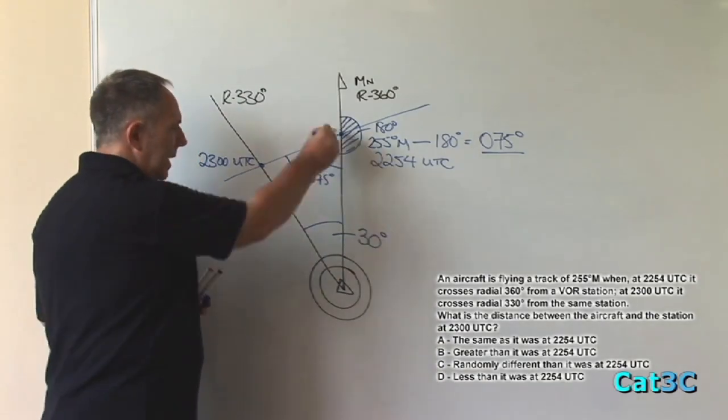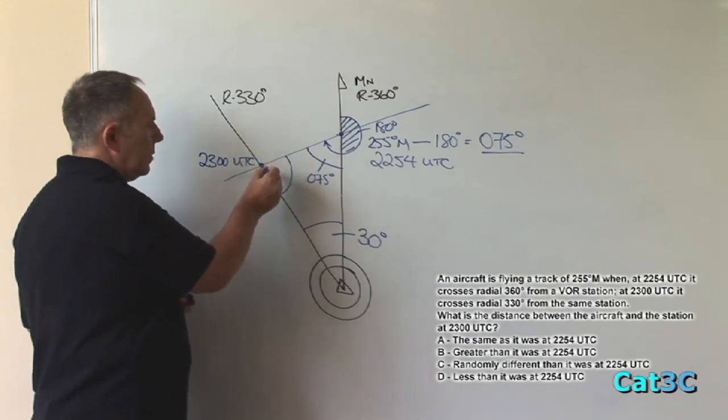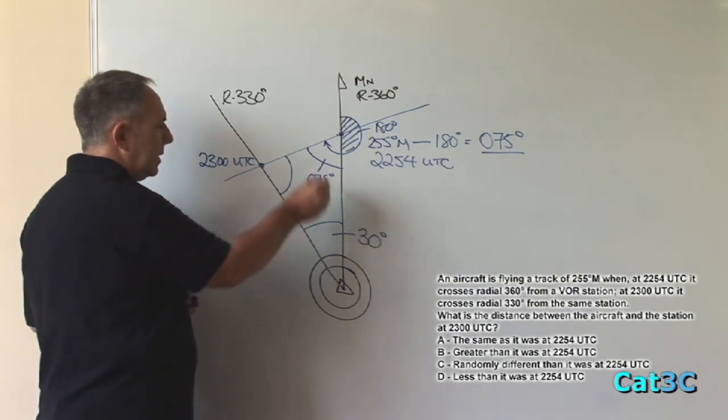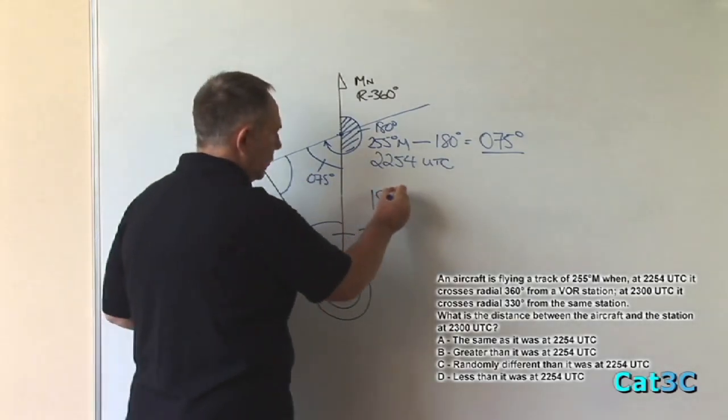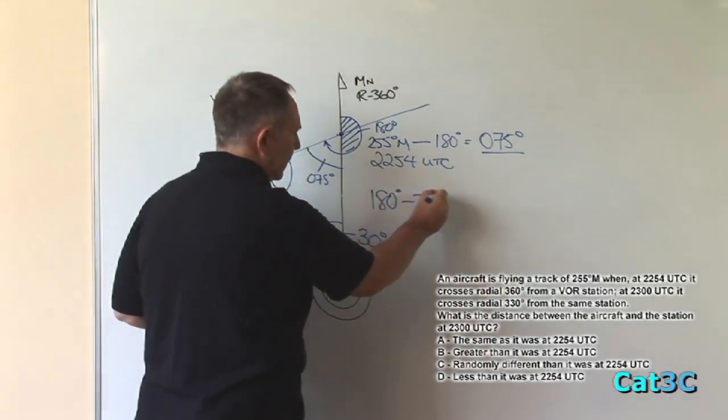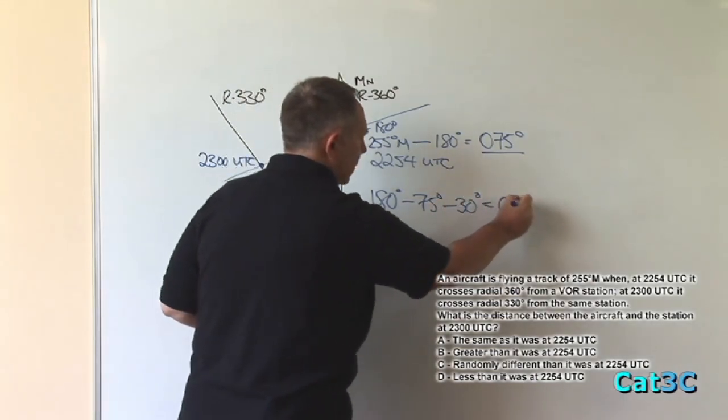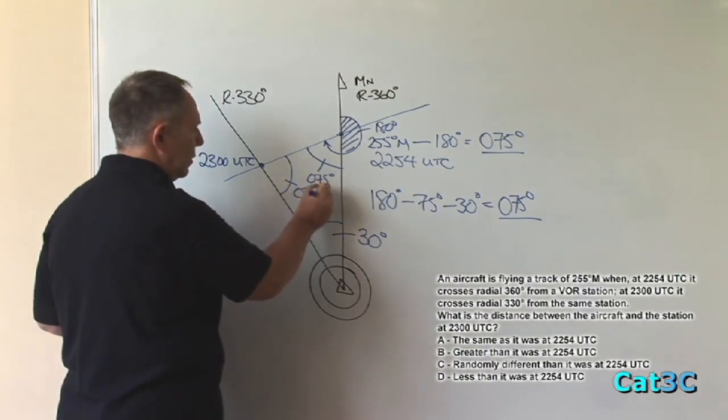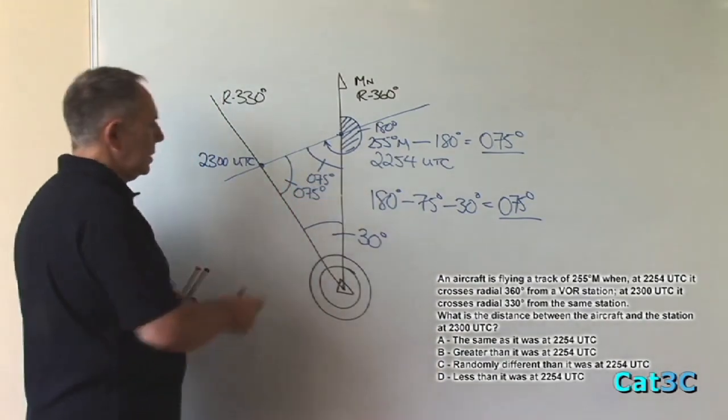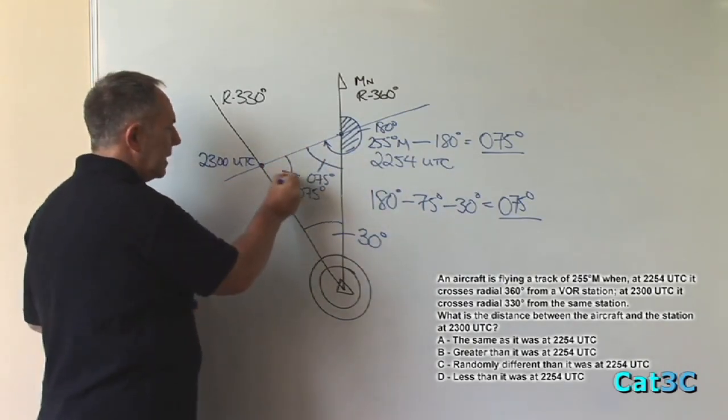Angles of a triangle add up to 180 degrees. So to find the third angle, I simply subtract the first two from 180. So 180 minus 75 minus 30 equals 75 degrees, meaning that this angle is 75 degrees also. Note that both angles at this edge of the triangle are the same value.